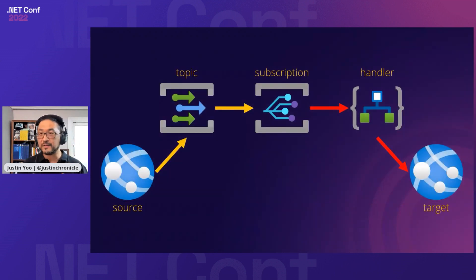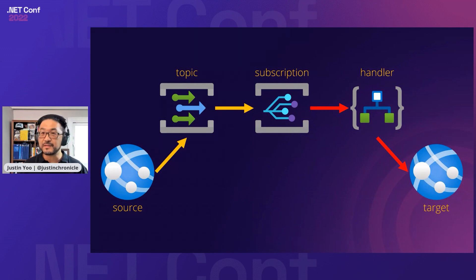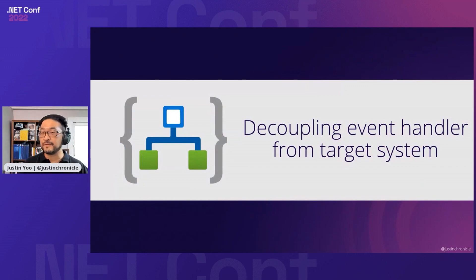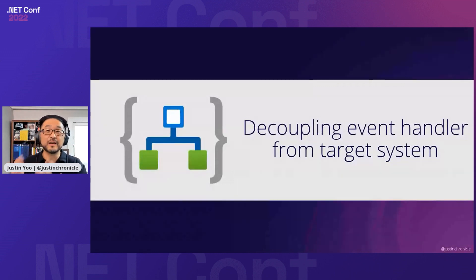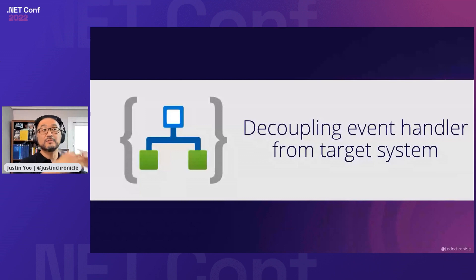But if you put Azure Logic Apps between the Event Grid subscriber and the target system, then Logic Apps does everything for you — all those pre-flight logic is already handled within the Logic App. Logic Apps can also decouple between the Event Grid subscriber and target system. By doing so, your target system doesn't have to be changed. It just works as it is, and your target system doesn't need to understand what cloud events are or where the Azure Event Grid subscriber is.